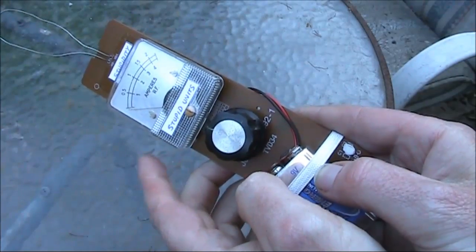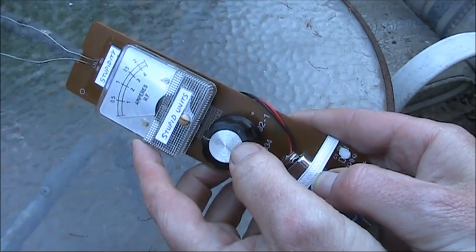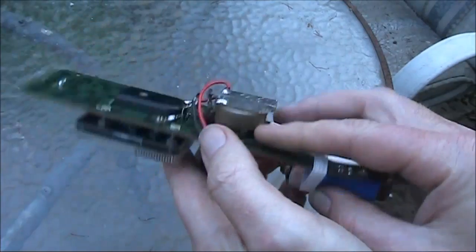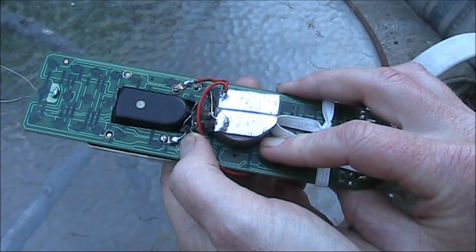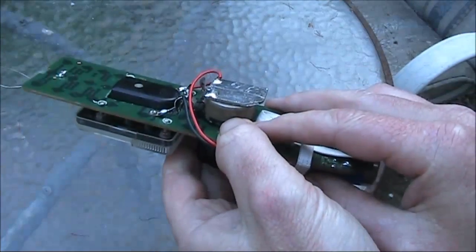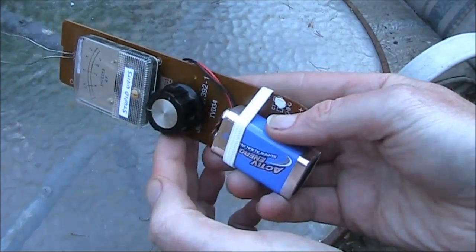There are very few parts involved: a meter movement, not critical, but a full-scale deflection of about 1 milliamp is okay; an NPN transistor that you might just be able to see under my thumb; a potentiometer, about 250k; and a 9-volt battery.